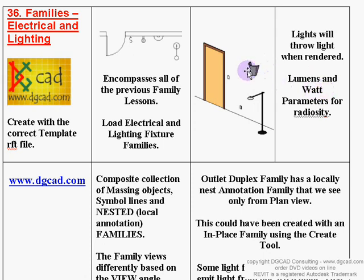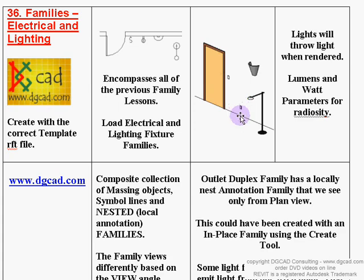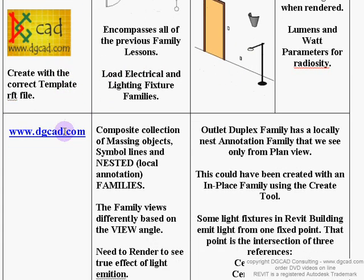When you create a lighting fixture family, it comes with predetermined parameters for lumens and watts that you can populate so the renderer knows how bright the light is. You can create different types — for example, a lamp with 100, 150, or 200 watts. Ceiling lights are hosted by a ceiling, the sconce is hosted by a wall, and the freestanding lamp isn't hosted by anything — it just sits on the floor.